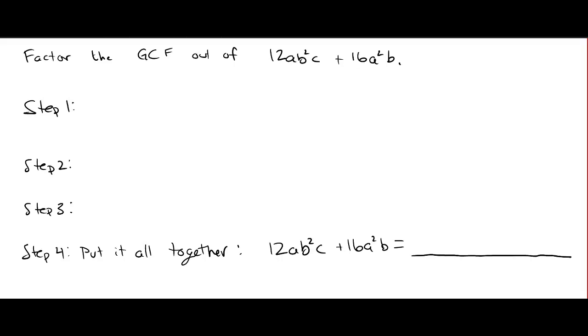This problem asks us to factor the GCF out of the polynomial 12ab squared c plus 16a squared b. So what does this mean? Remember, GCF is our abbreviation for greatest common factor.